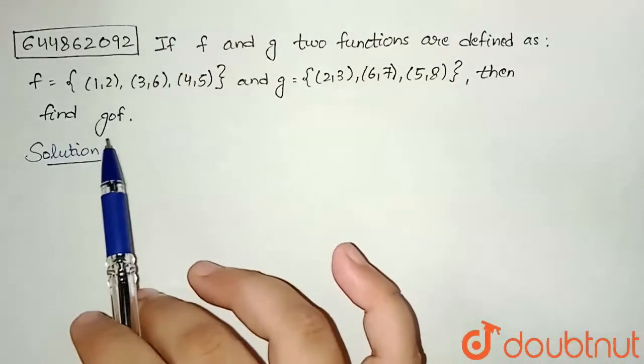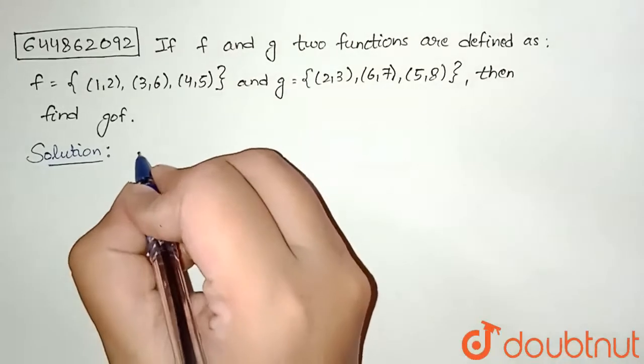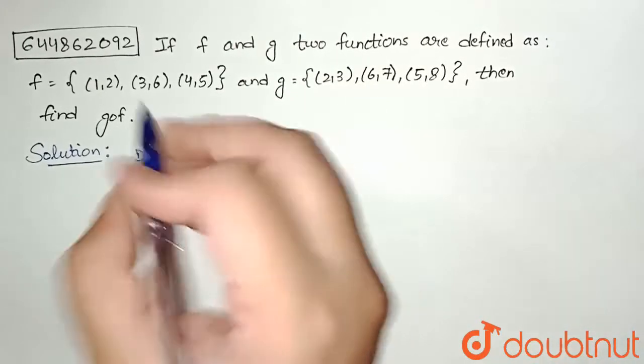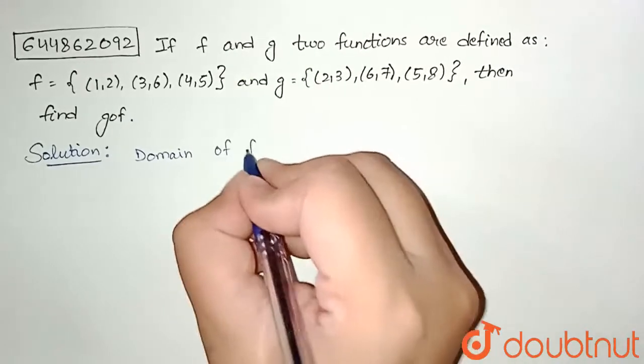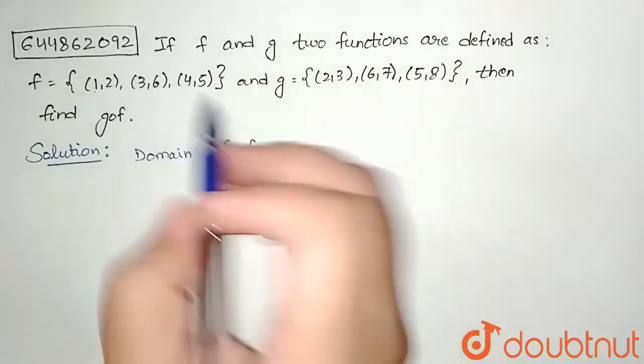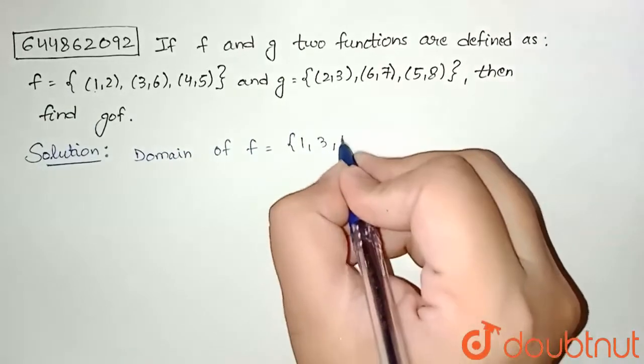So here I can observe that the domain of f, because here gof, so we need to find domain of f here. So domain of f will be equal to first term of each of the bracket, so that will be equal to 1, 3, 4.